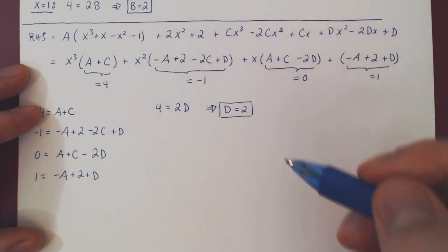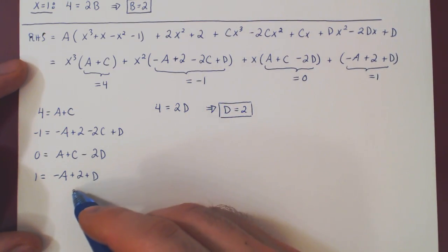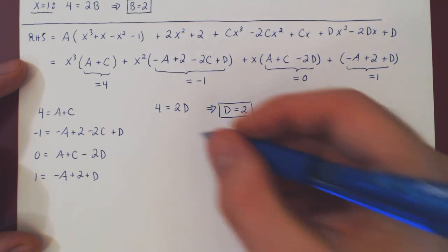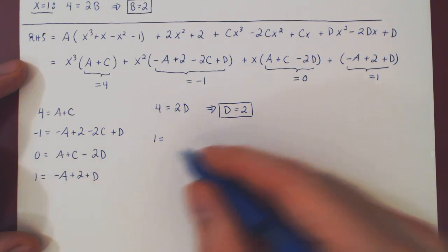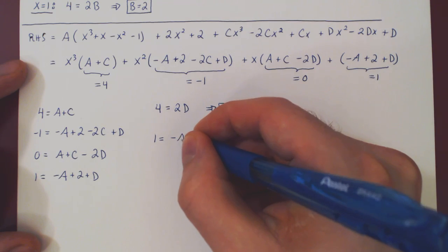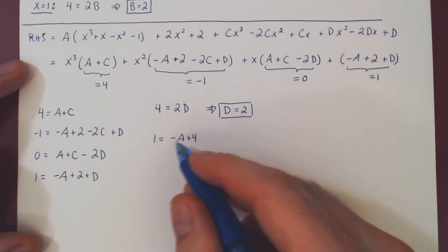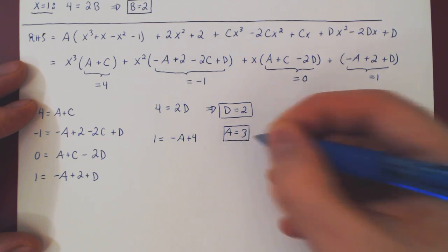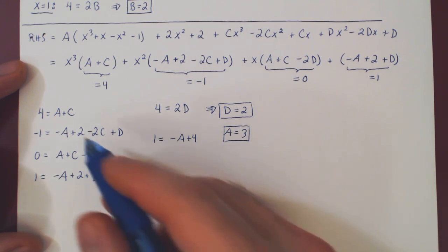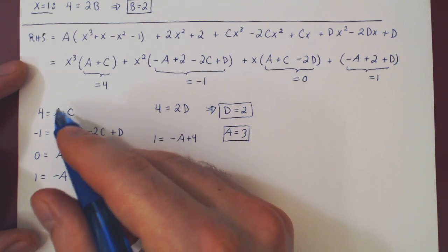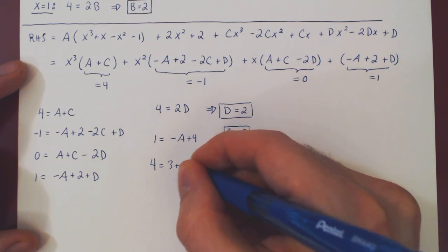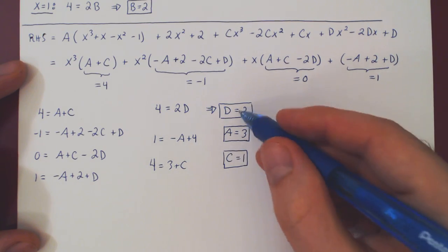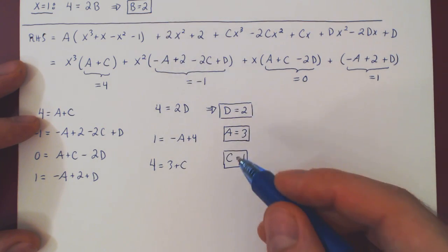The fact that both b and d equal 2 is purely coincidental. Since d is 2, we plug back into the equation 1 equals negative a plus 2 plus d, giving 1 equals negative a plus 4. So a must be 3. Now that we have both a and d, we can easily solve for c: plugging a equals 3 into 4 equals a plus c gives 4 equals 3 plus c, so c equals 1. We now have all four coefficients: a is 3, b is 2, c is 1, and d is 2.